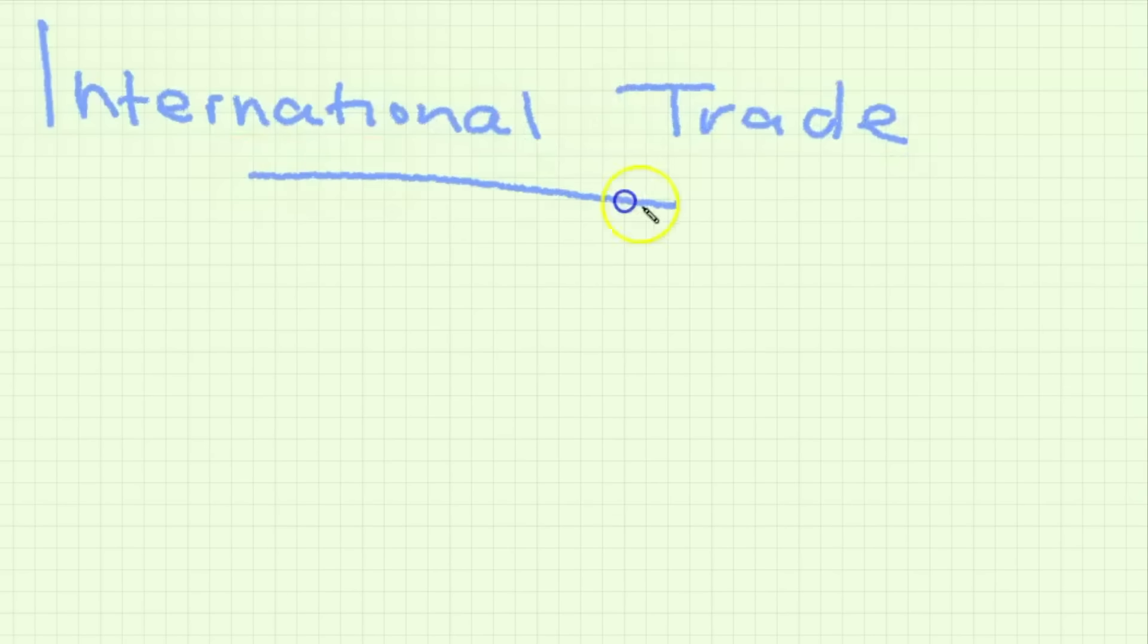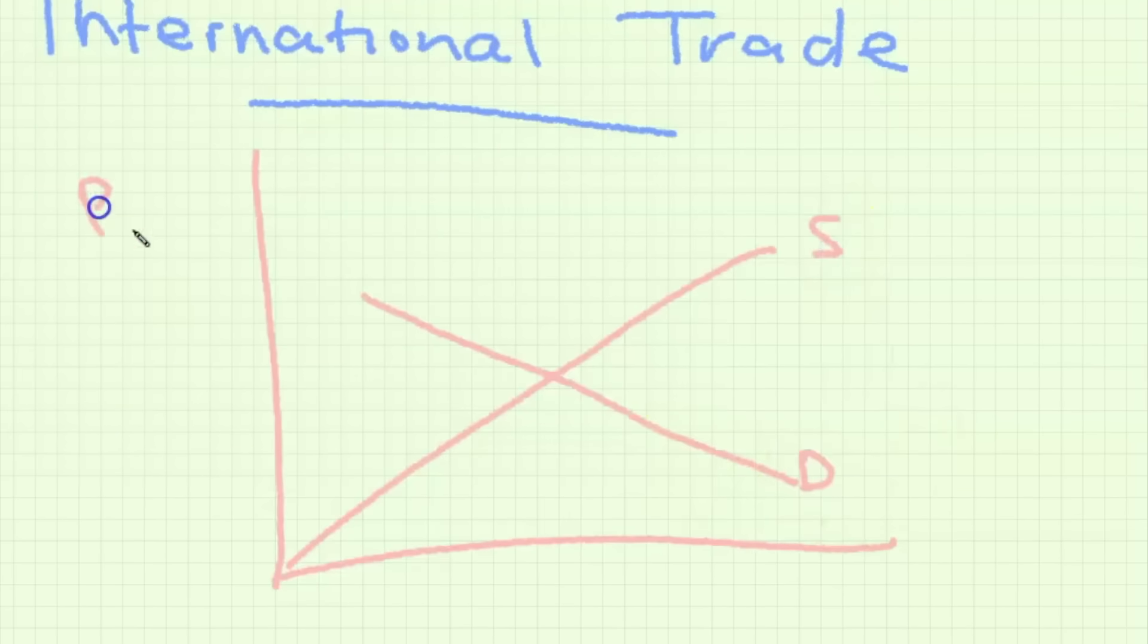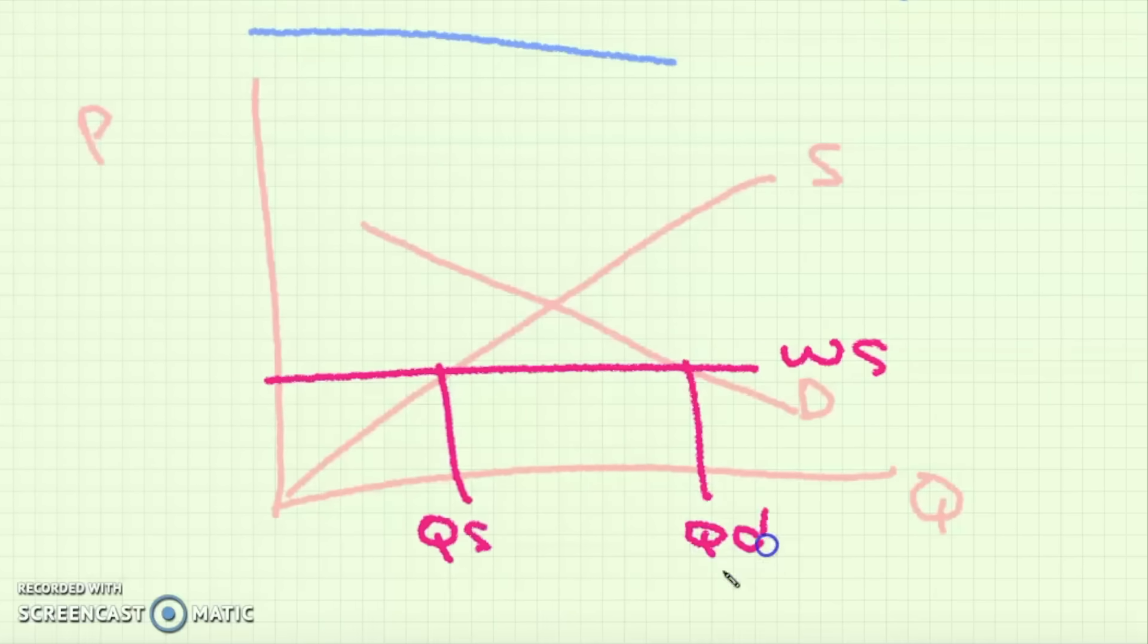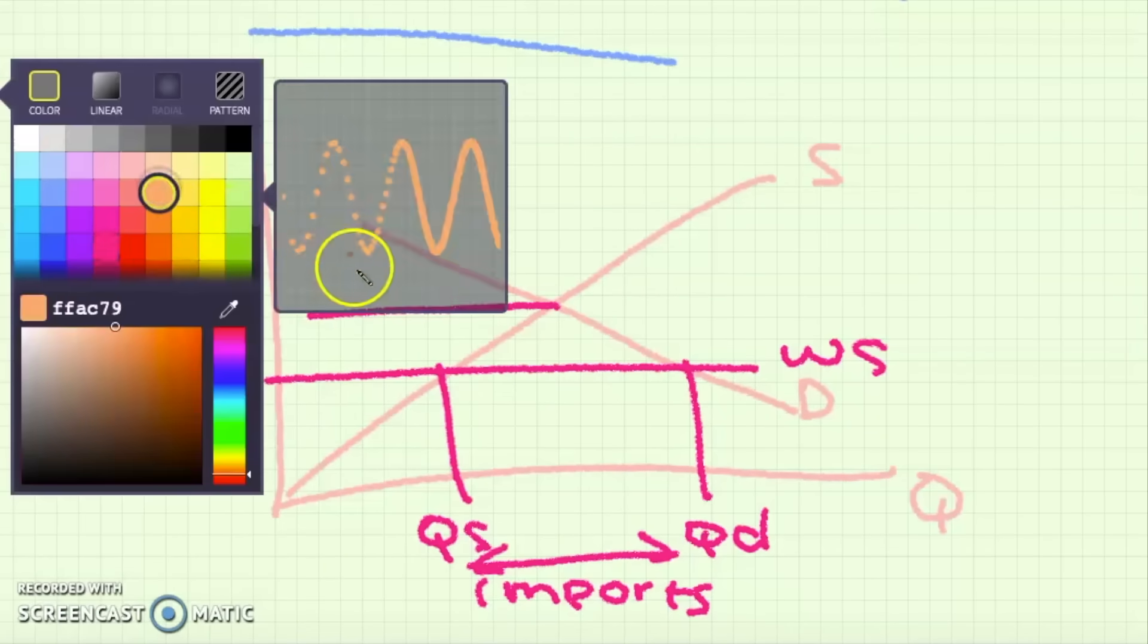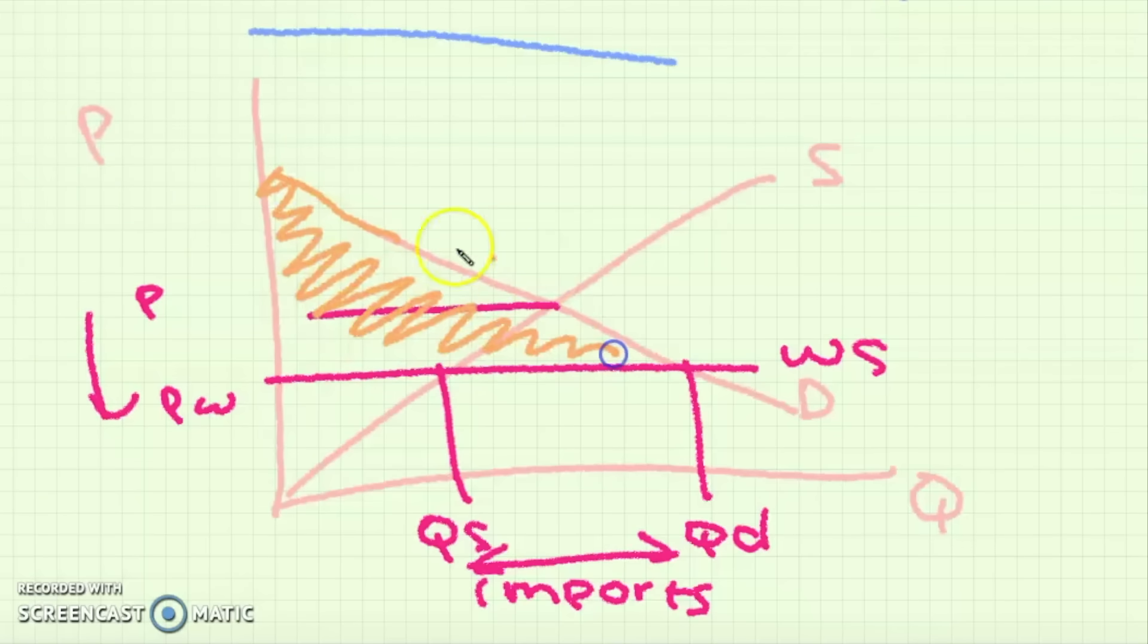Now for international trade. Assuming that there is free trade all we have to do is draw the domestic supply curve, domestic demand curve, and then the world supply curve underneath. The difference between what is supplied domestically and what is demanded domestically is filled in by imports. All of this triangle area in orange is the consumer surplus, the lower part is producer surplus.